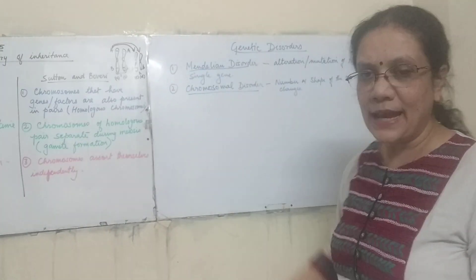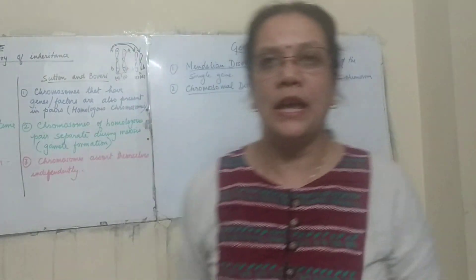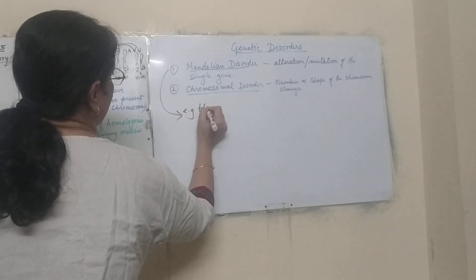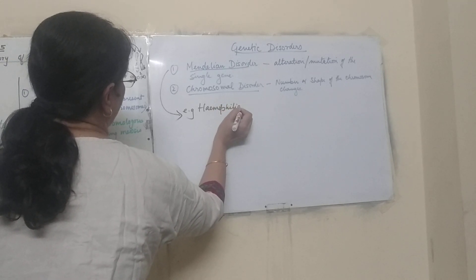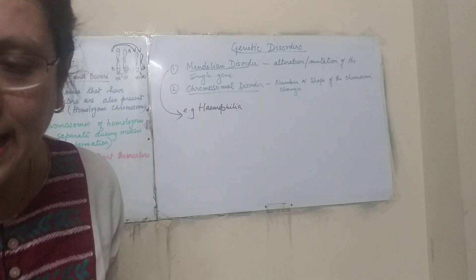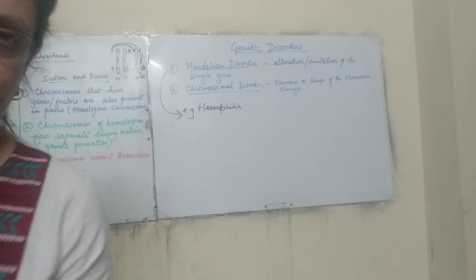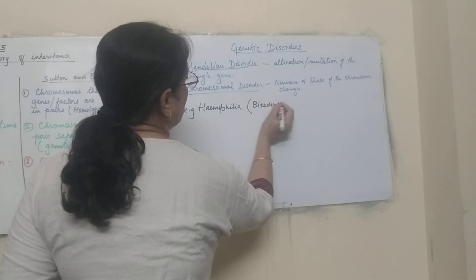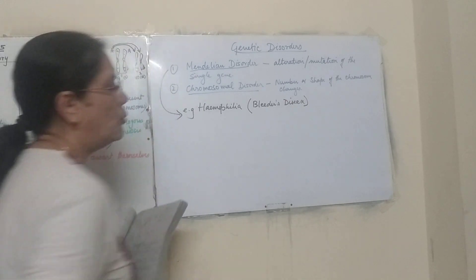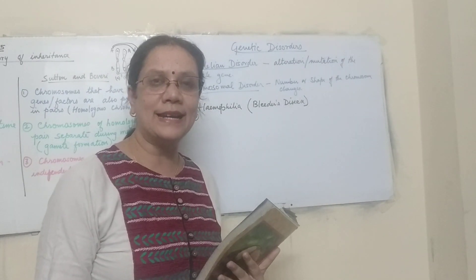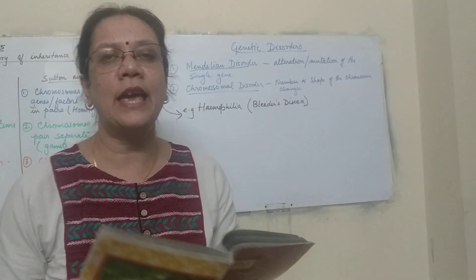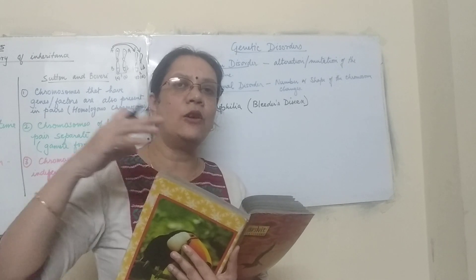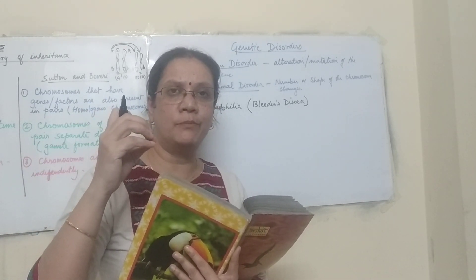Under Mendelian disorders, we will discuss hemophilia. Hemophilia is also known as the bleeder's disease. Why is it called bleeder's disease? If a person has any cut, their clotting time is greatly increased — it takes a very long time for blood clotting to start.